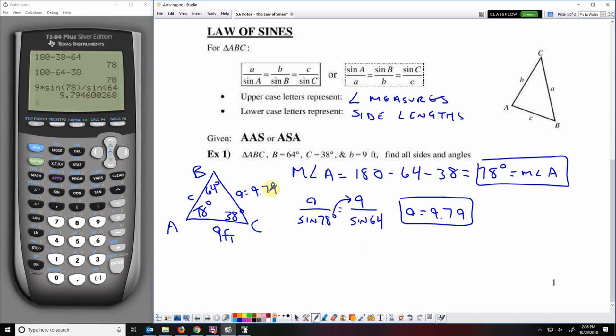Now I could use this 9.79 over sine 78 in my calculation to find C. But since I had to round this number, we're going to get more accurate results if we don't use this rounded number in any future calculations. There will be times when we have to, but whenever we can avoid using a rounded number to do a further calculation, we're going to go ahead and avoid that. So we're going to do C over sine 38 equals, so instead of doing 9.79 over sine 78, I'm going to use a number that I know is exact, 9 over sine 64.